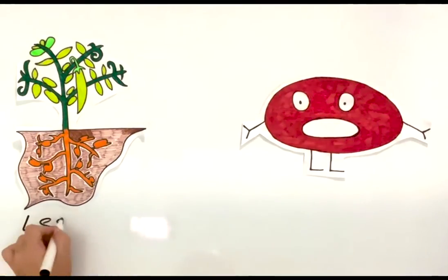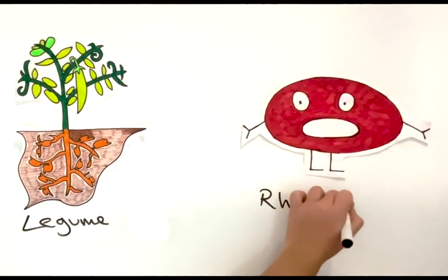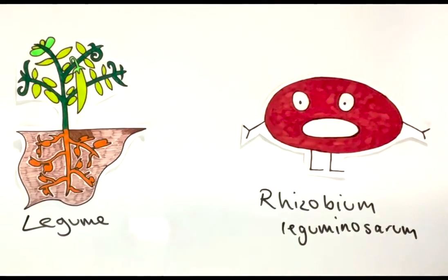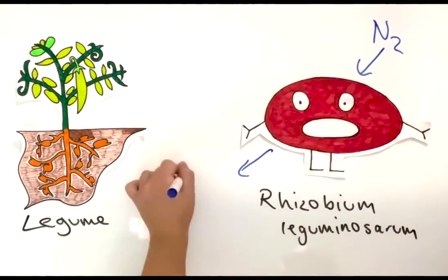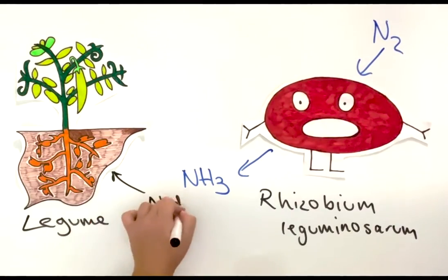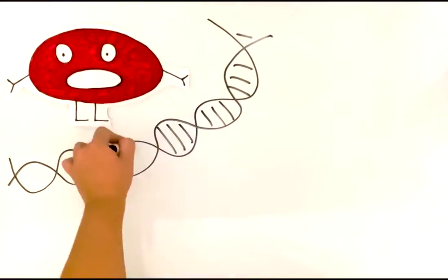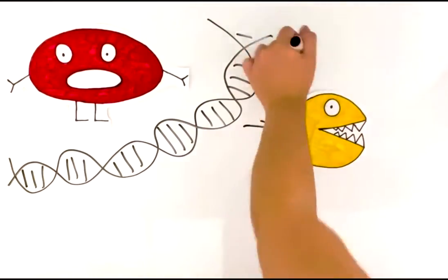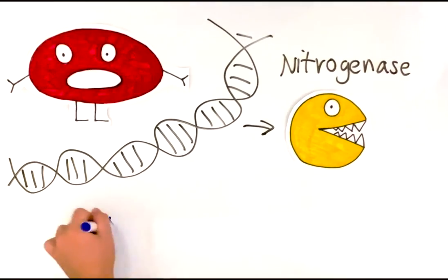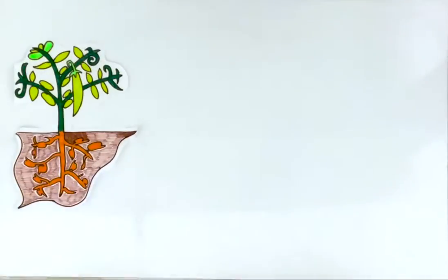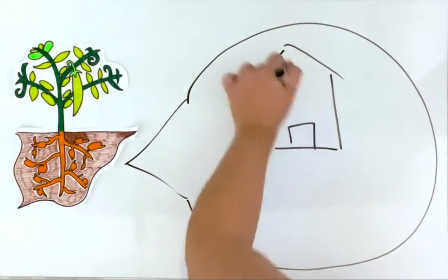Legumes have evolved a natural mechanism in which they use a symbiotic relationship with the bacteria Rhizobium leguminosarum to fix nitrogen into the usable form of ammonia. The bacteria R. leguminosarum live in small nodules on the root of the legume plant. R. leguminosarum contain genes to synthesize the enzyme nitrogenase, which catalyzes the ATP-dependent reaction of turning nitrogen into ammonia, which the plant uses to grow. In return, the legume provides a home for the bacteria.